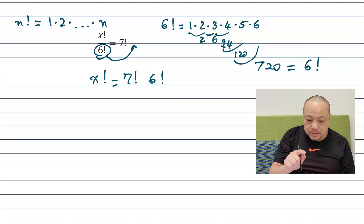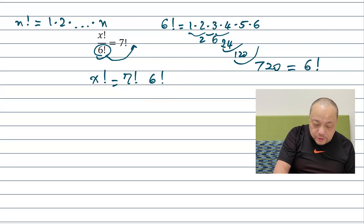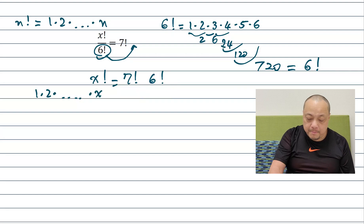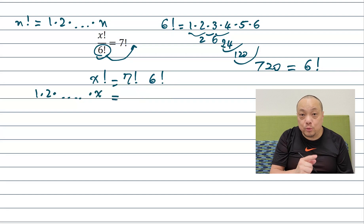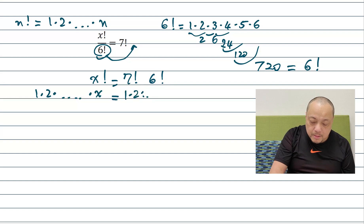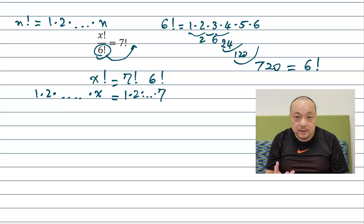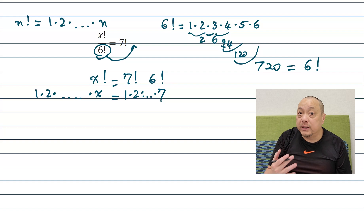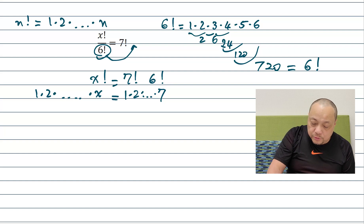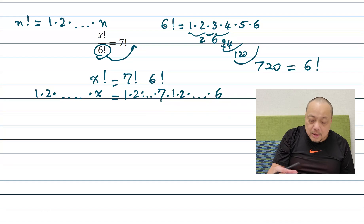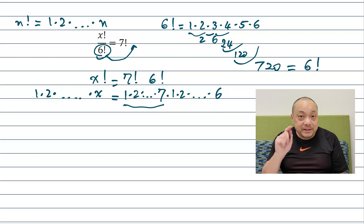On the left hand side we have x factorial which is equal to 1 times 2 times all the way up to x. On the right hand side we have 7 factorial, 1, 2, 3, 4, 5, 6, 7. But then it's multiplied by 6 factorial meaning I restart the multiplication from 1. So it times 1 again, 2, 3, 4, 5, 6. So there's a mismatch.